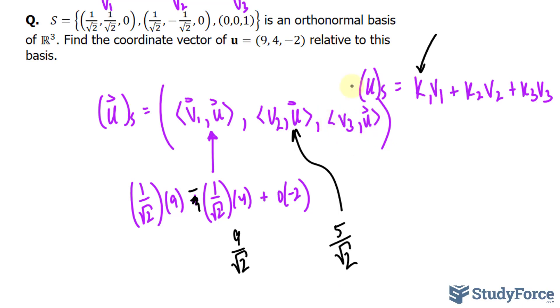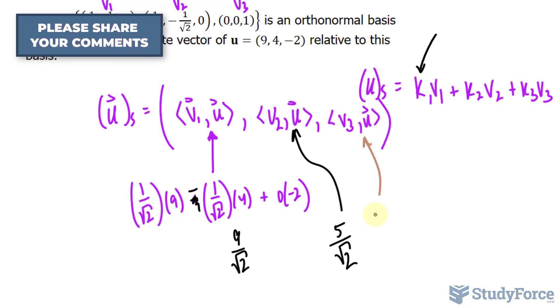And by doing this one, the inner product of v₃ with the vector u, if you do it correctly, you should end up with negative 2.